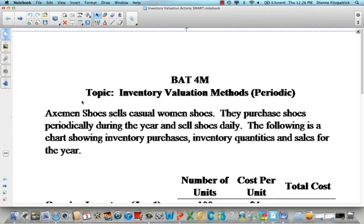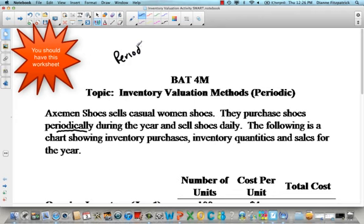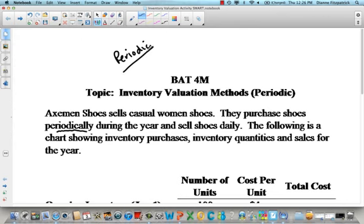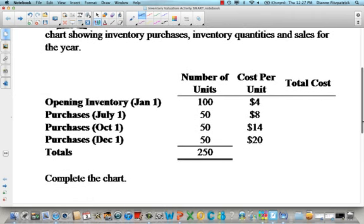So what we're going to do here is look at an example. Hopefully you can copy this down, or I've given you the blank worksheet that you can do with this video. Axman Shoes here is a company and they sell women's shoes. They purchase shoes periodically. Remember we're studying the periodic inventory system. We need to be able to value our inventory in order to figure out what our ending inventory and our cost of goods sold is. They purchase shoes periodically and sell shoes daily. The following is a chart showing inventory purchases, inventory quantities, and sales for the year.